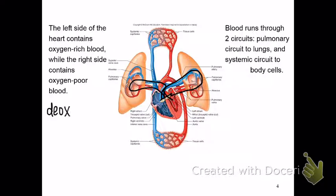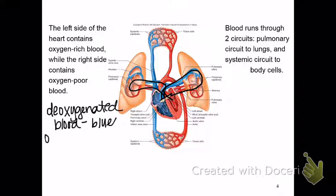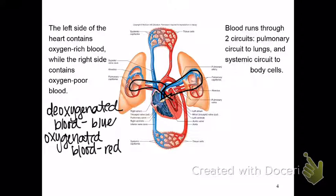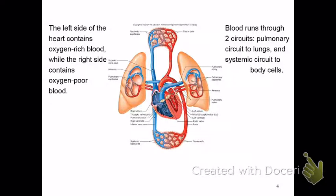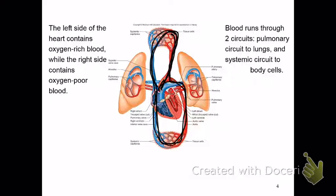Deoxygenated blood — blood with no oxygen — is shown as blue in all textbooks, and oxygenated blood is shown as red. The systemic circuit transports oxygen-rich blood from the heart to the body and back to the heart. The systemic goes all the way to your pinky toe and back, while the pulmonary circuit is shorter.